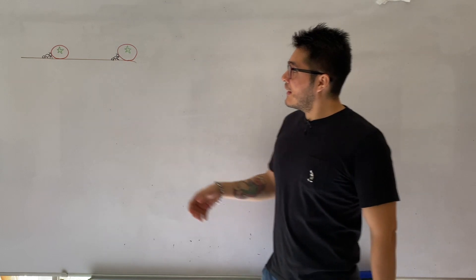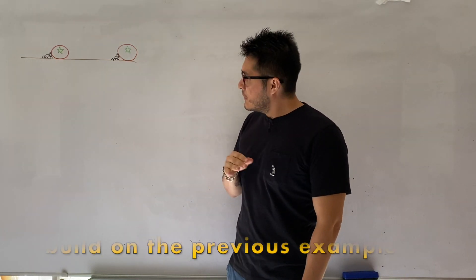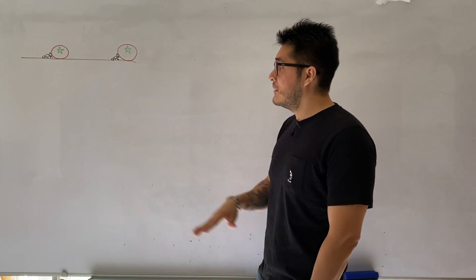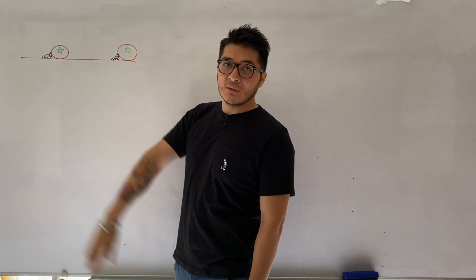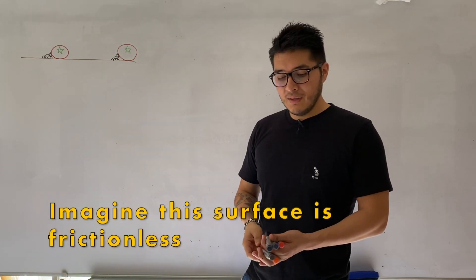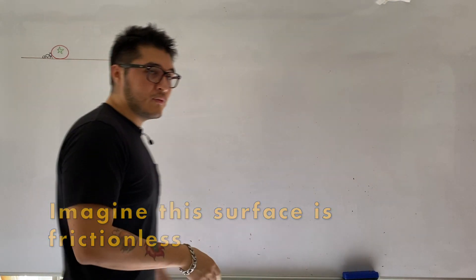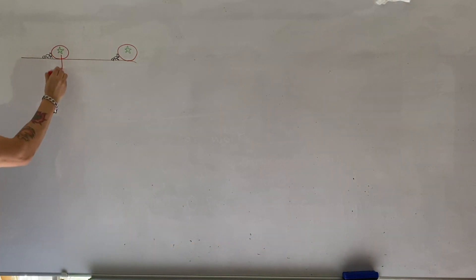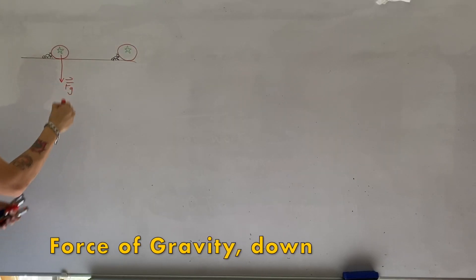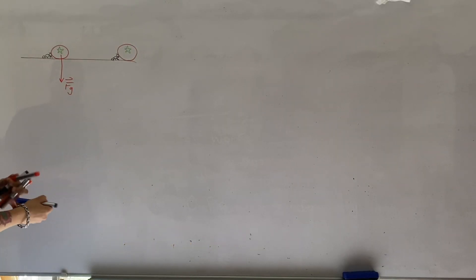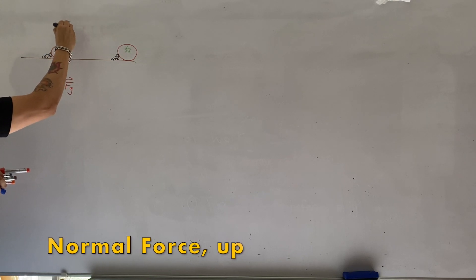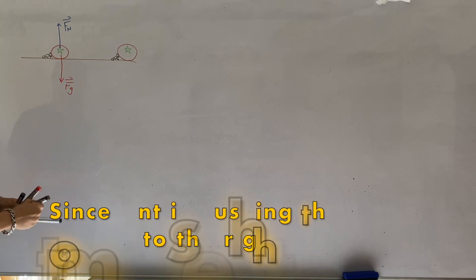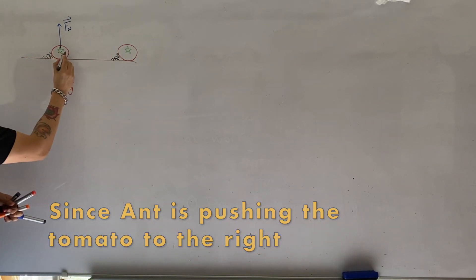Last time we were looking at an ant pushing a tomato but the surface was rough because we assumed it was grass. Now we're going to make it a lot easier for the ant and assume that this surface is going to be frictionless. If we look at the forces acting on the tomato, we have the force of gravity acting downwards, the normal force acting up, and since the ant is pushing the tomato to the right, our applied force is directly to the right.